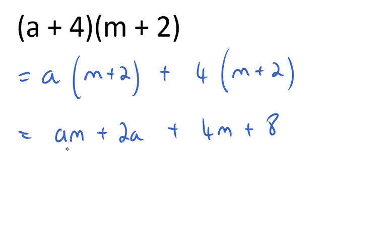Now there are no like terms — there's AM, 2A, 4M, and 8. None of these can be simplified down into anything else, so the problem is finished at that point.